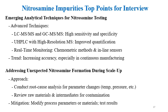For addressing unexpected nitrosamine formation during scale-up, the approach is to conduct root cause analysis for parameter changes such as temperature and pressure, review raw materials and intermediates for contamination, and then modify the process parameters or materials. Test results should be checked for compliance.